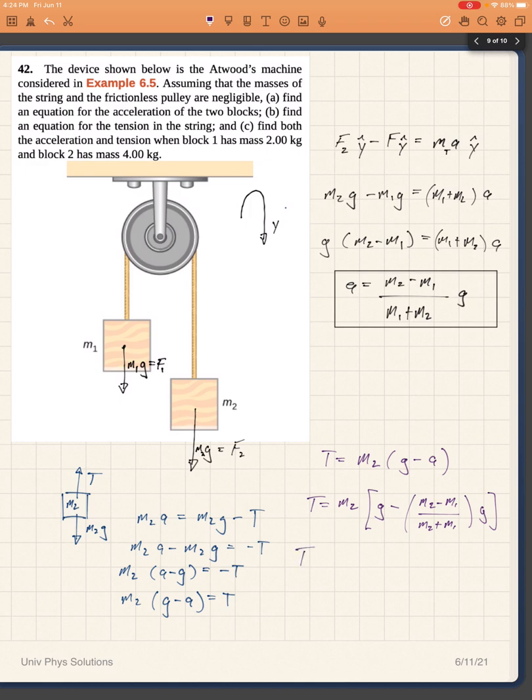I can factor out G and I have 1 minus M2 minus M1 over M2 plus M1. I need to distribute that negative and put it in a common denominator. Let's just put it as one single common denominator.